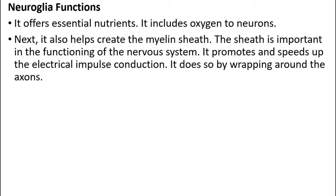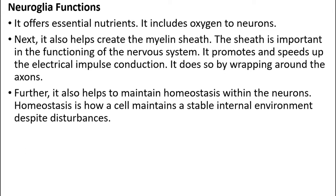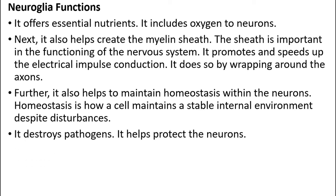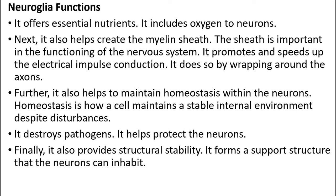Neuroglia functions: they offer essential nutrients including oxygen to the neurons. They help to create the myelin sheath. They also help to maintain homeostasis within the neurons and destroy pathogens, thus helping to protect the neurons. They provide structural stability, forming a support structure that neurons can inhabit.